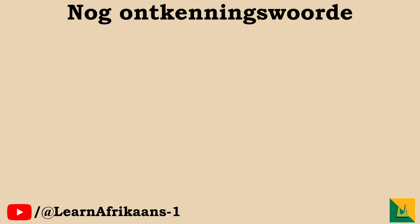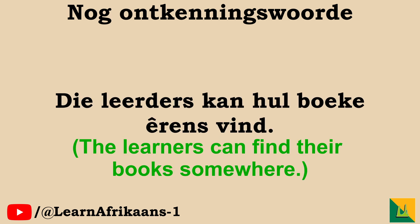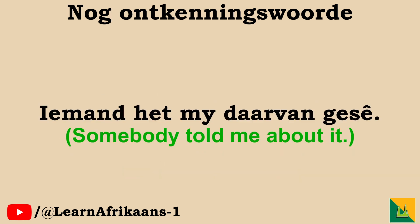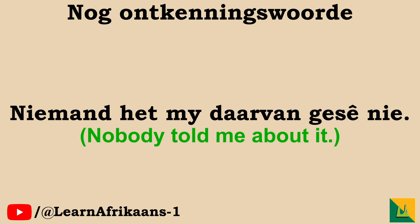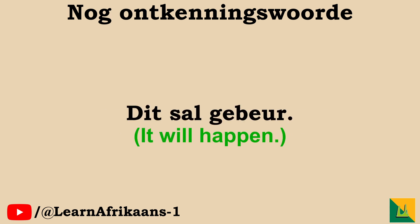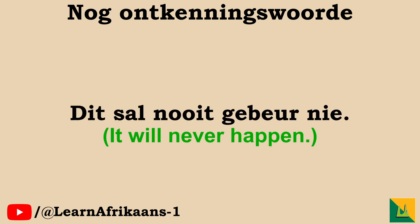Look at how these words appear in sentences. Die leerders kan hulle boeke êrens vind becomes Die leerders kan hulle boeke nêrens vind nie. Iemand het my daarvan gesê becomes Niemand het my daarvan gesê nie. Daar is nies becomes Daar is geen nies nie. Dit sal gebeur becomes Dit sal nooit gebeur nie.